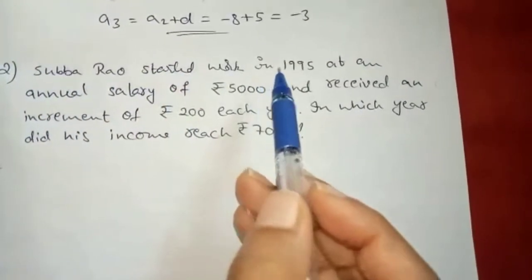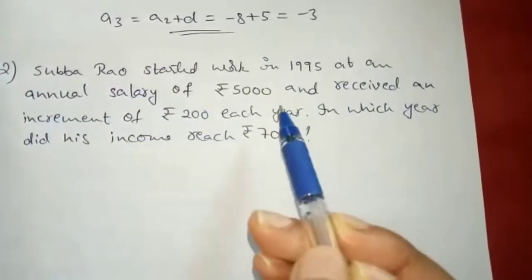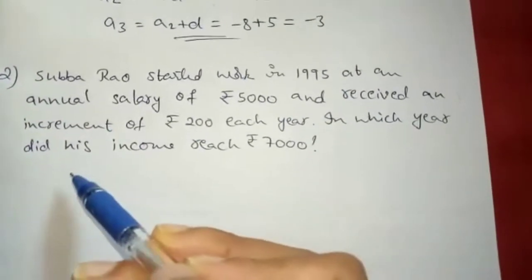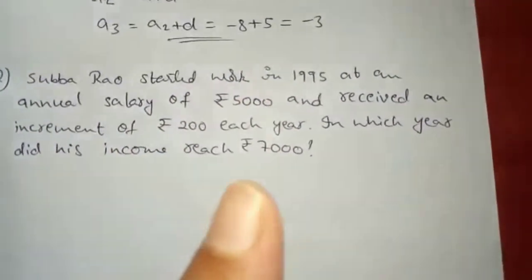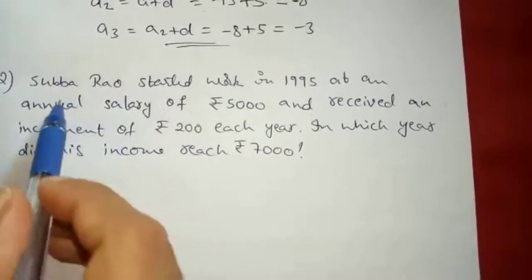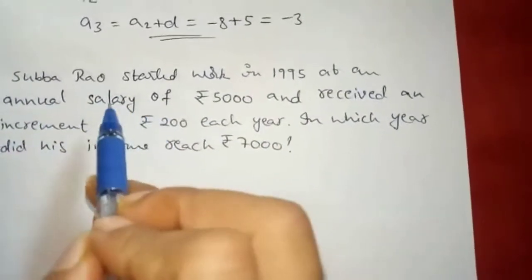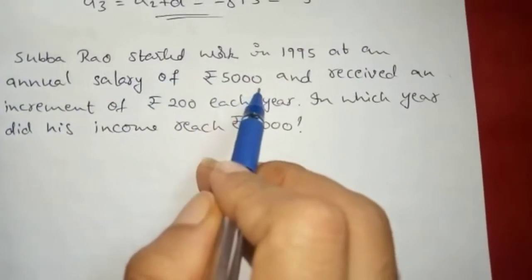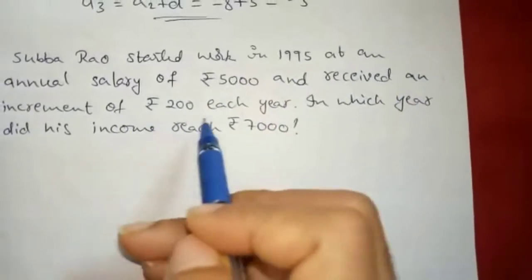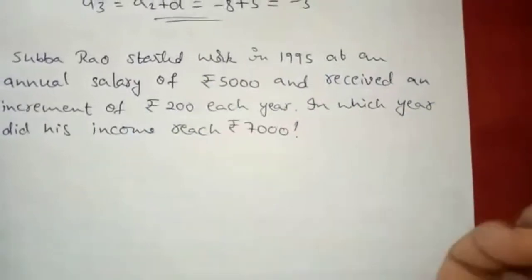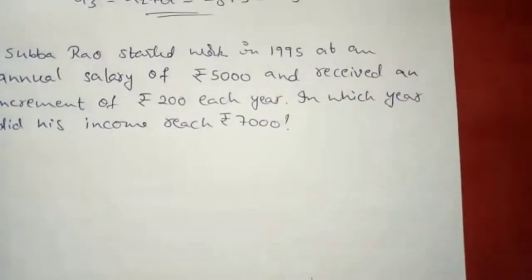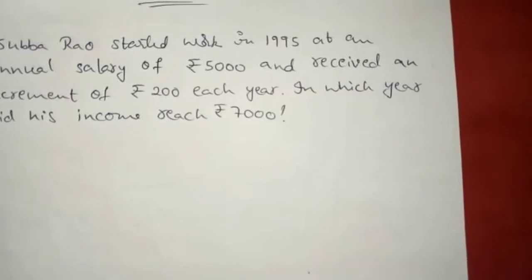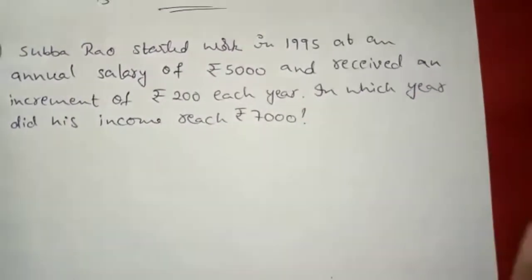Next question: Subba Rao started work in 1995 at an annual salary of Rs. 5,000 and received an increment of Rs. 200 each year. In which year did his income reach Rs. 7,000? So Subba Rao started with a salary of Rs. 5,000 in 1995, and each year it increased by Rs. 200. We have to find in which year he got Rs. 7,000 as his salary.